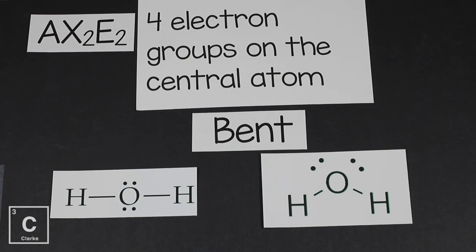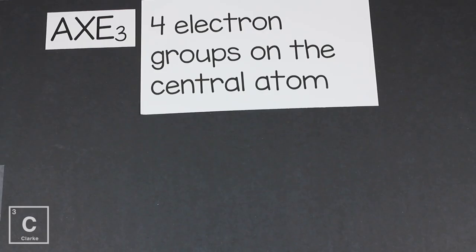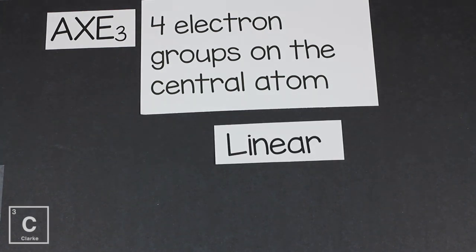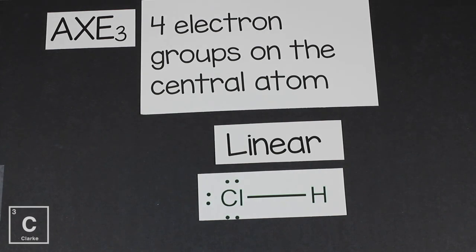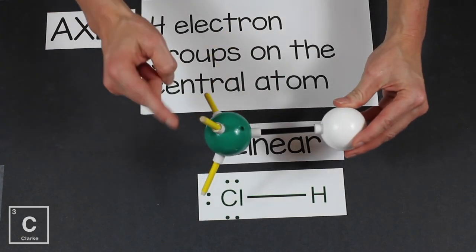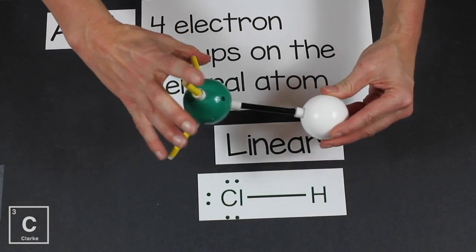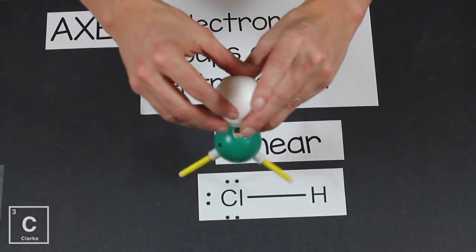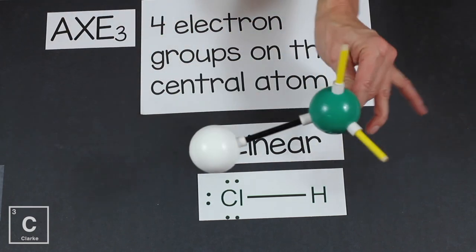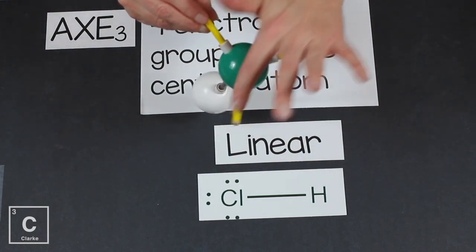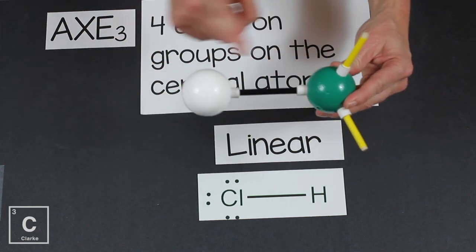The last example with four electron groups: a central atom, only one bonded atom, and three lone pairs. If we look at hydrochloric acid and consider chlorine to be the central atom, we see that chlorine has three lone pairs and one bond. Because we've only got two atoms, two atoms are always going to be linear. Those three lone pairs shift the bond, but we still have that tetrahedral electron arrangement. We get a linear molecule.